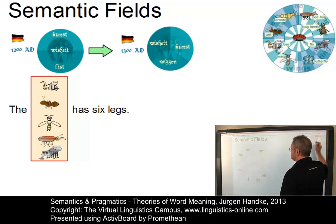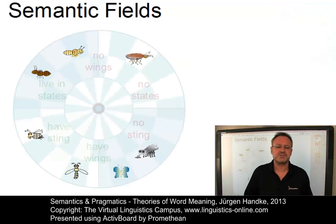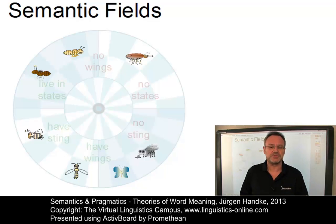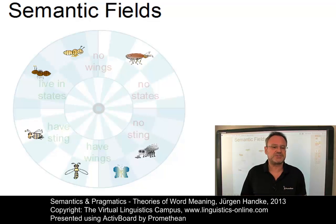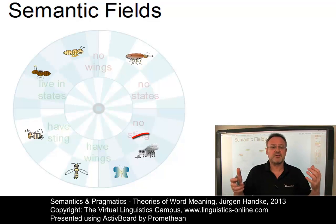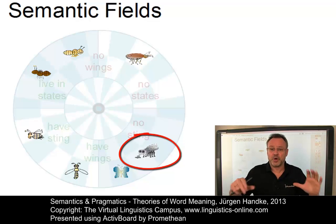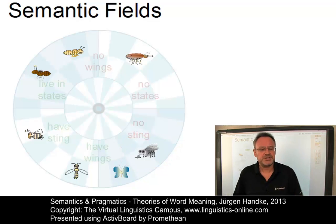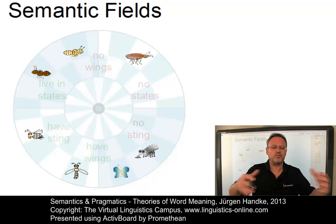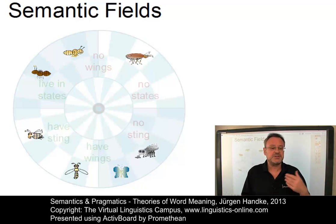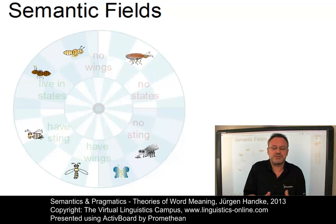The items in semantic fields have related senses, but they are not necessarily synonymous. In fact, the meaning of a lexeme defines itself in terms of contrasts with other lexemes in the field. Part of our understanding of 'fly' is: not ant, not bee, not termite, not wasp. The relationships among items in a semantic field can cover a whole range of sense relations. Changes in the meaning of one lexeme may affect the meanings of other lexemes related through the network of semantic relationships within the field.